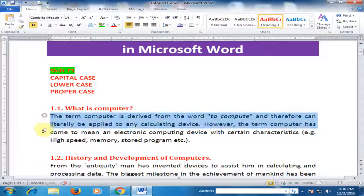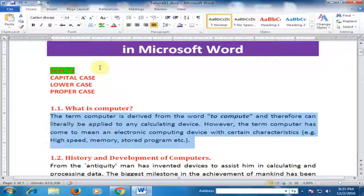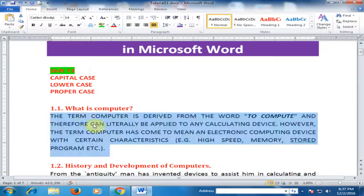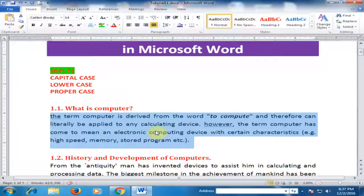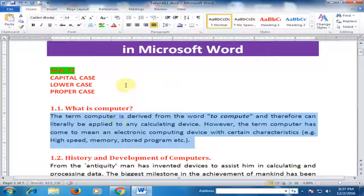Just select the paragraph and press Shift F3. All the letters will be capital. Again press Shift F3, all the letters will be in lower case. And again pressing Shift F3, every sentence's first letter will be capital.